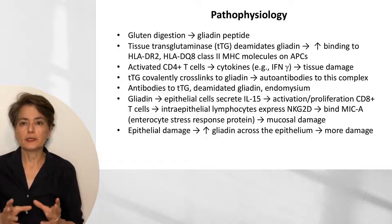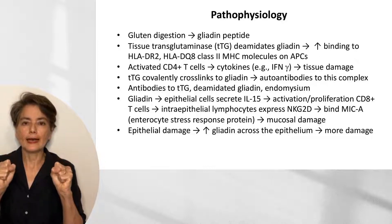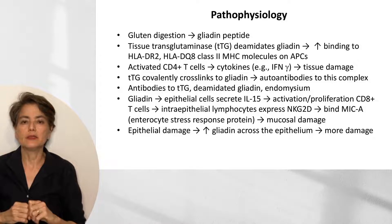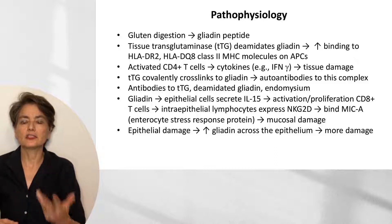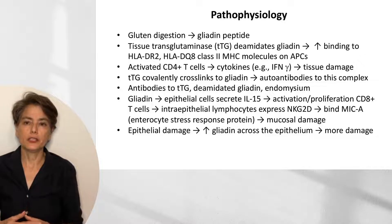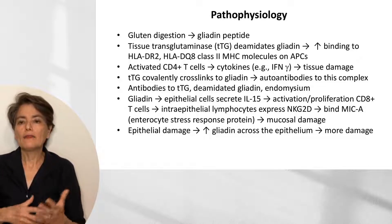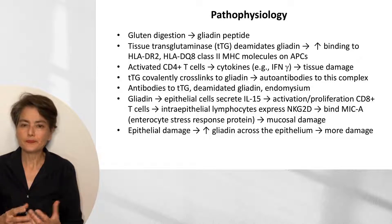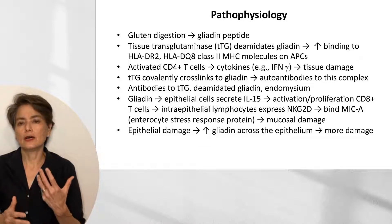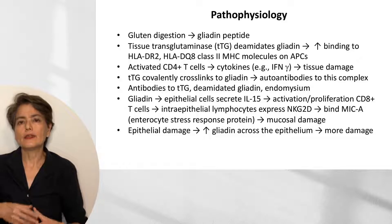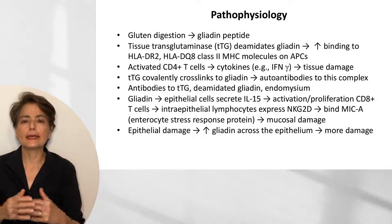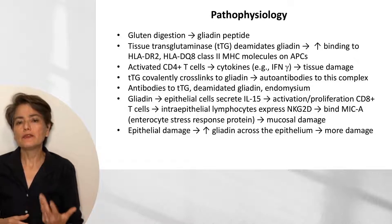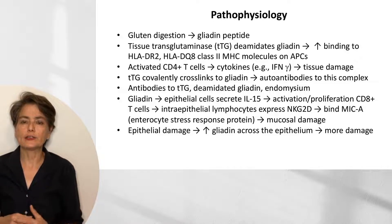The antigen-presenting cells grab onto that gliadin and present it to CD4-positive T-cells, activating them. The activated CD4-positive T-cells generate cytokines such as interferon gamma, which can cause tissue damage. In this inflammatory milieu, previously hidden epitopes become exposed, and we develop antibodies to tissue transglutaminase, deamidated gliadin, and endomysium — that thin sheath around muscle bundles.